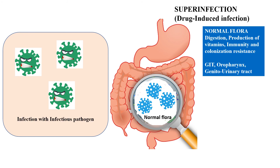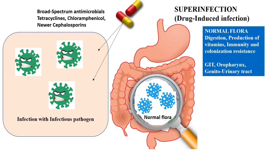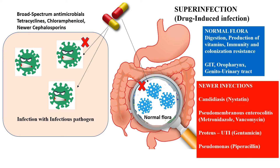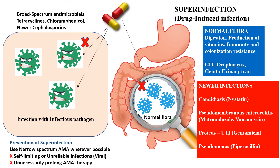When a broad-spectrum antibiotic such as tetracyclines, chloramphenicol, or newer cephalosporins is used against a pathogen, it can also kill the normal flora, leading to superinfections such as candidiasis, pseudomembranous enterocolitis, Proteus infections, and Pseudomonas infections. Treatment: nystatin for candidiasis, metronidazole for pseudomembranous enterocolitis, gentamicin for Proteus infections, and piperacillin for Pseudomonas superinfections.